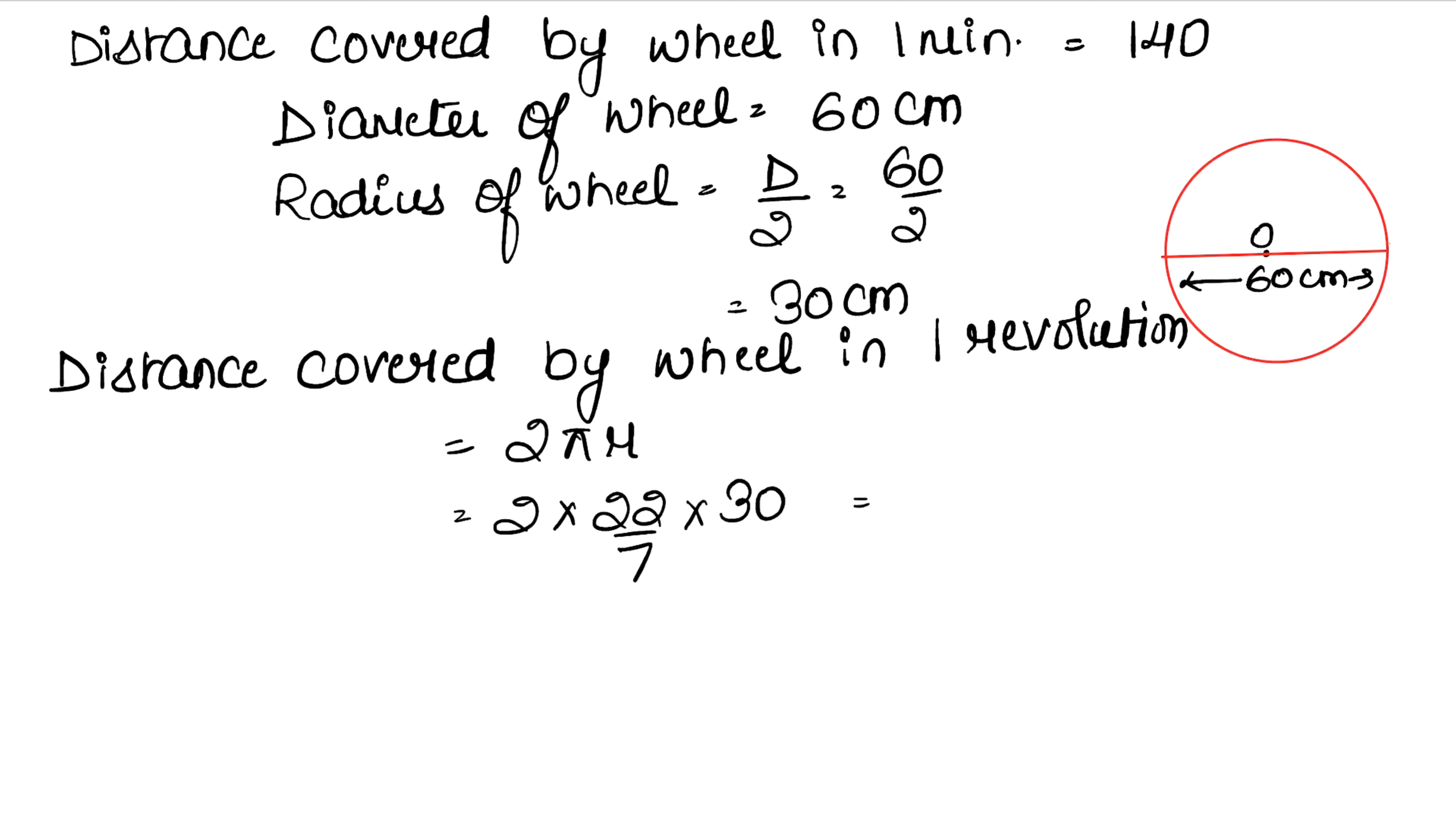2 times 3 is 6, so 60 times 22 is 1320 upon 7. This gives 1320 divided by 7, which equals approximately 188.57 cm. The distance covered by wheel in one revolution.